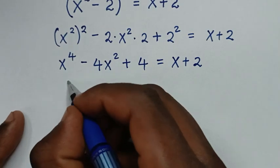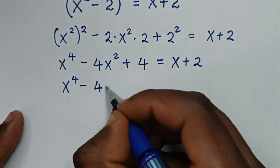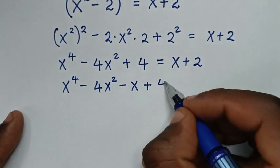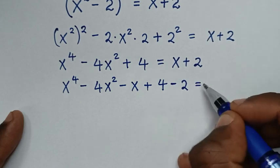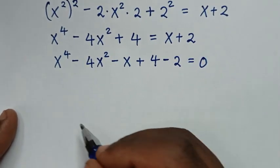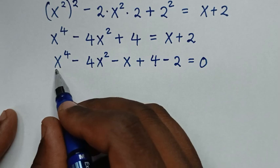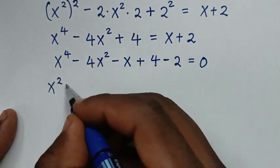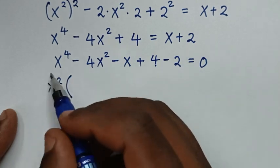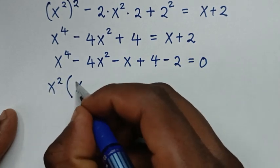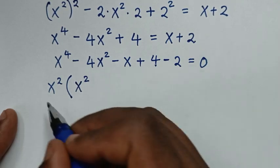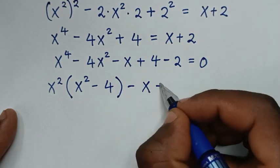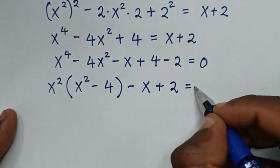In the next step, we rearrange: x⁴ minus 4x² — we take x to this side, so minus x — then plus 4, and we take 2 to this side, so minus 2, equals 0. That gives us x⁴ minus 4x² minus x plus 2 equals 0.